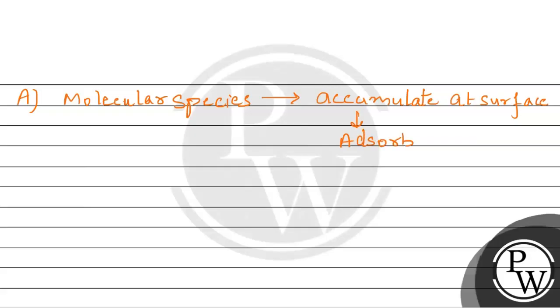To abhi hum ye discuss kar ke aa hai humne. That means ye jo option hai, ye correct option hai. Kyunki adsorbate wo substance hoota hai, jo accumulate hoota hai dousre substance pe. Ab option number B ko agar dekhen,